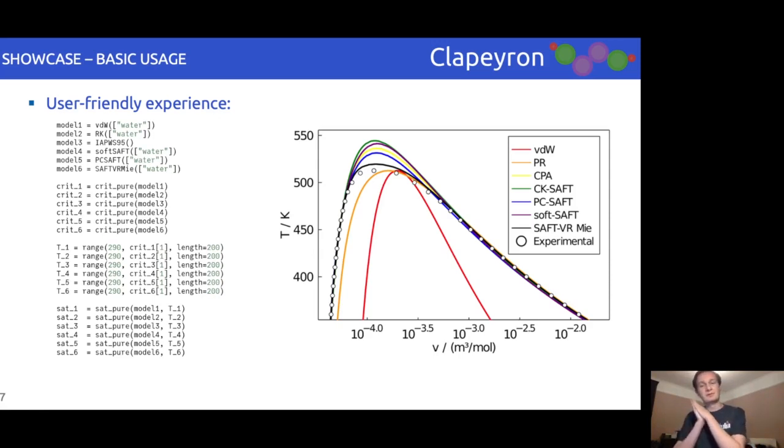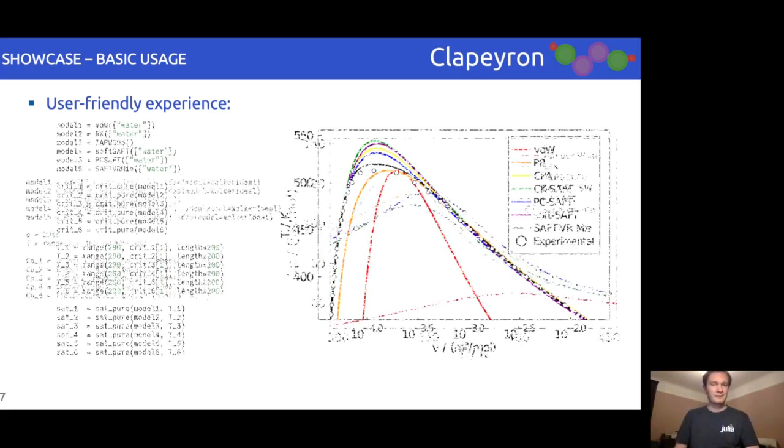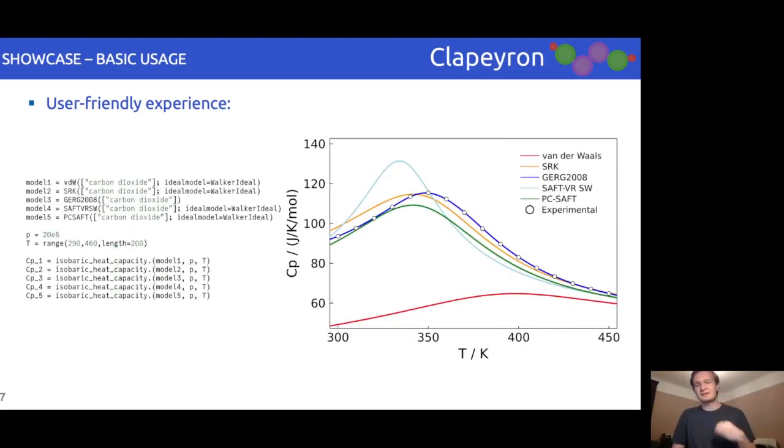Here we compute the vapor-liquid equilibrium envelope for methanol, and here we compute the heat capacity for carbon dioxide. You may have noticed that these properties use Julia's broadcasting features, allowing for very easy computation of various properties.